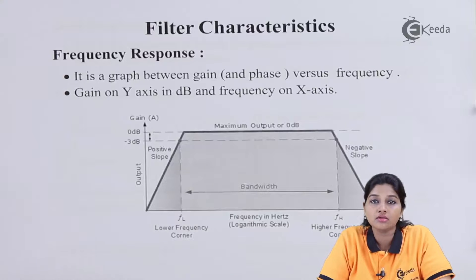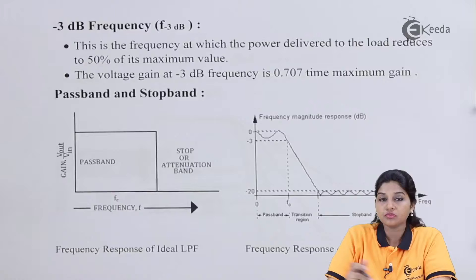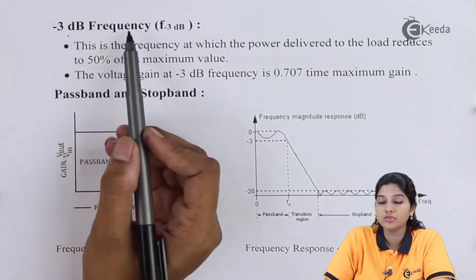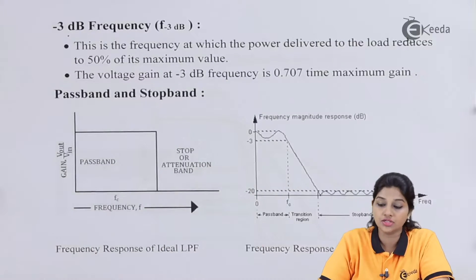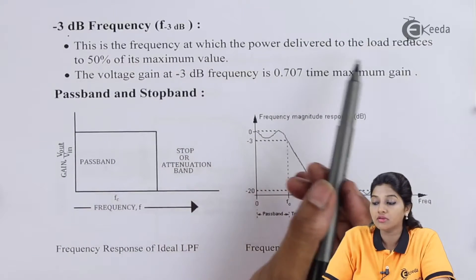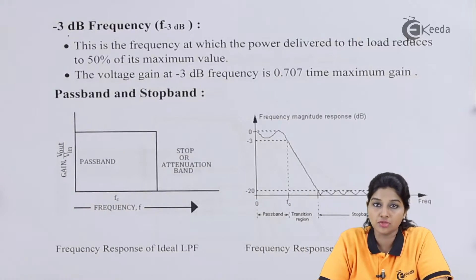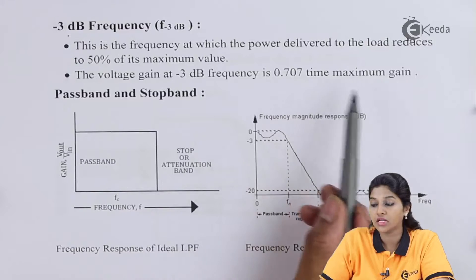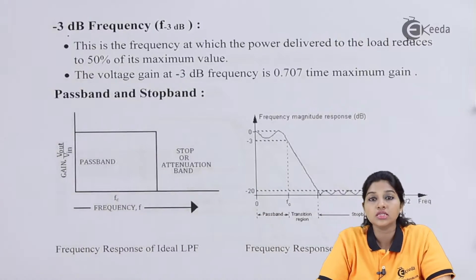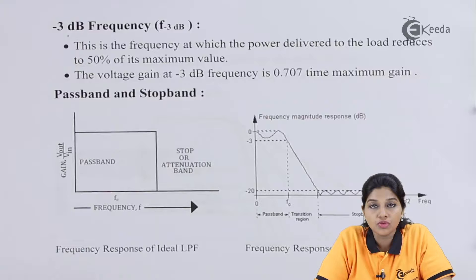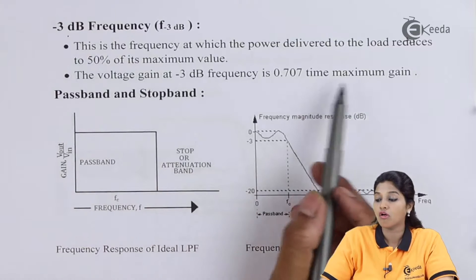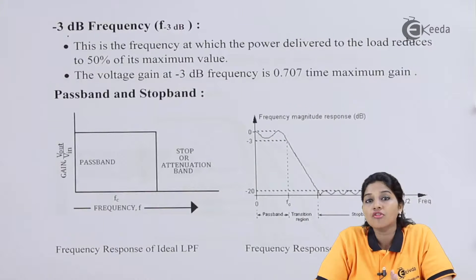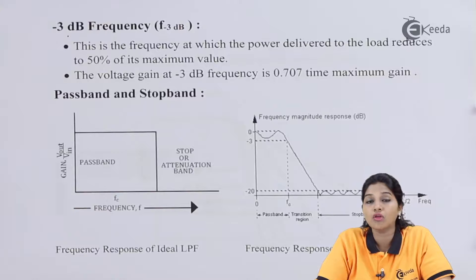The next characteristic is minus 3 dB frequency, or F minus 3 dB. This is the frequency at which power delivered to the load reduces to 50% of its maximum value. The voltage gain at minus 3 dB frequency is 0.707 times the maximum gain, or 70.7% of maximum gain. When plotting a frequency response and calculating bandwidth or pass band, we always consider the minus 3 dB frequency from the maximum gain.